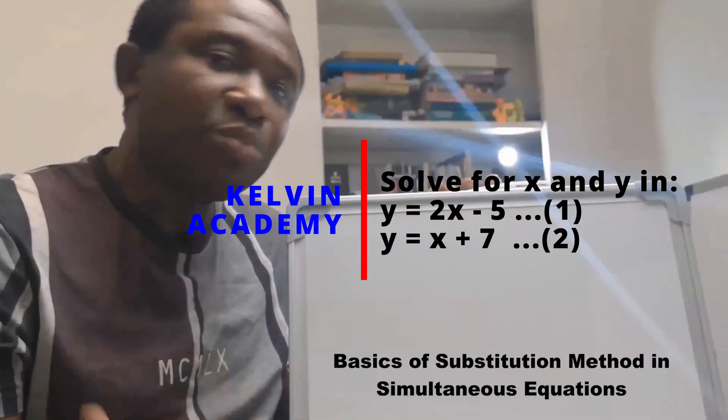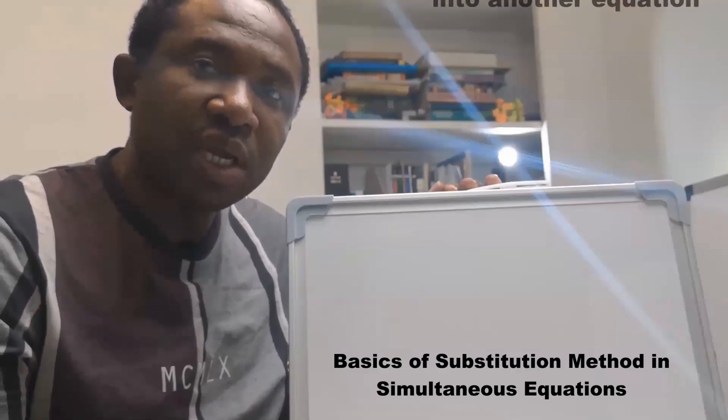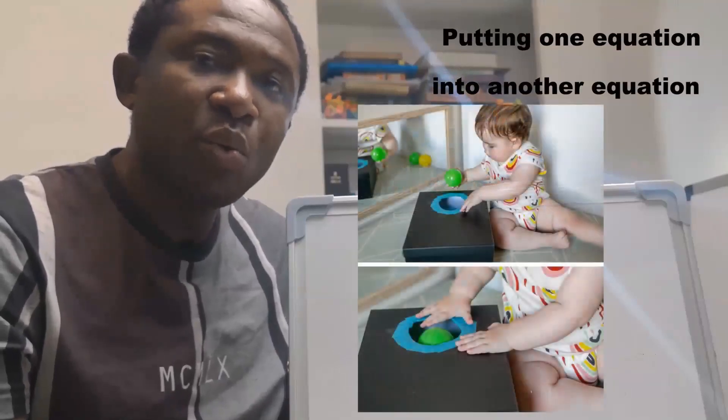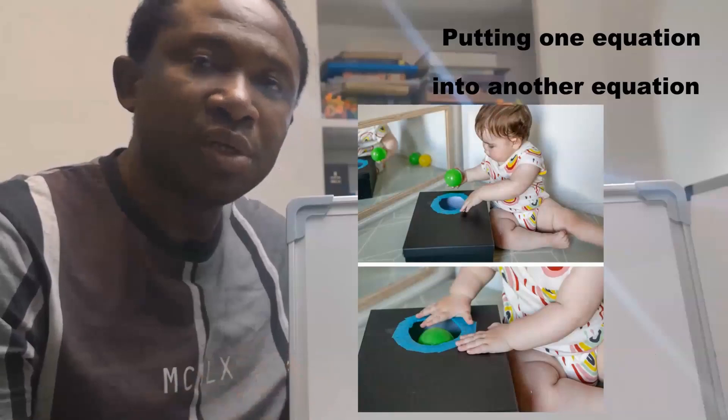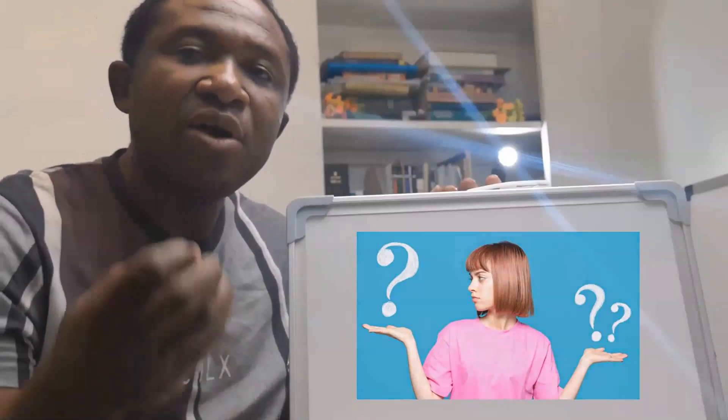Using substitution method in simultaneous equations involves putting one equation into the other one. Also, it involves equating two equations that have similarities.